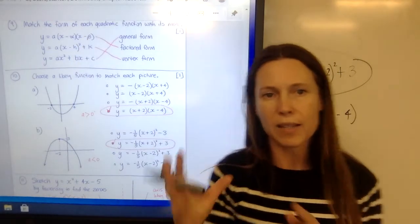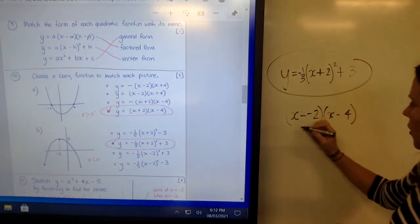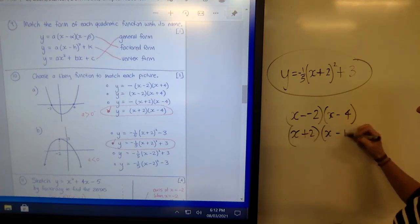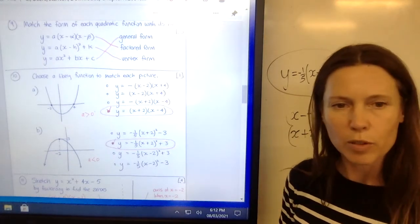Where it always has minus something. Now obviously you can tidy that up and say we need it to be x plus 2 and x minus 4. And that helps me pick this one as the option.